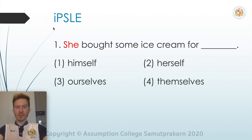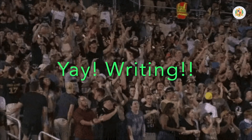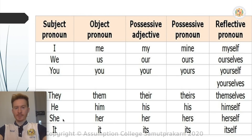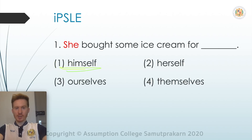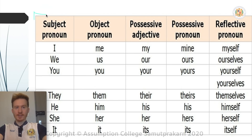Let's look at some questions from the IPSLE exam. The first one: 'She bought ice cream for ___.' As we can see, she is a subject pronoun. The answers to the question are all reflexive pronouns, so we must find the reflexive pronoun of 'she'.